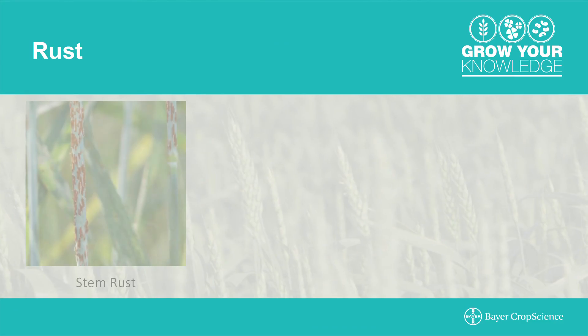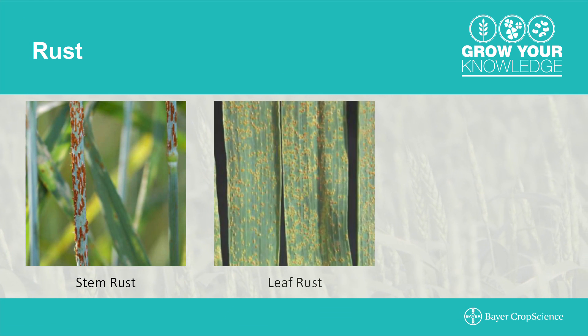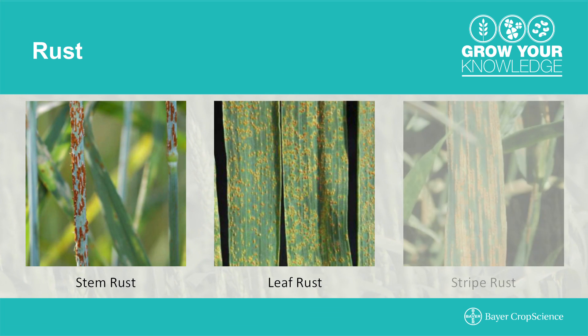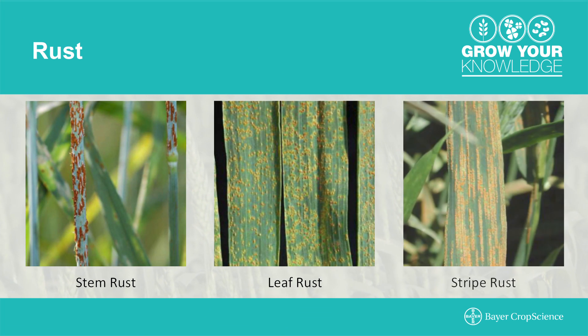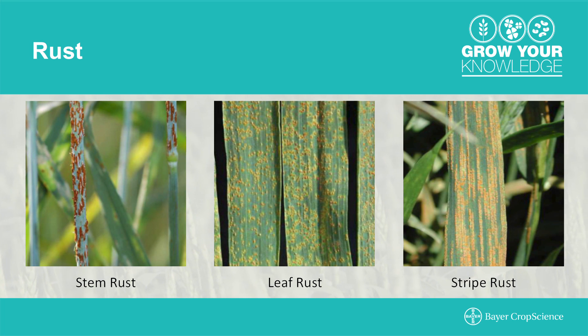When we look at rust diseases, the key is to protect the upper leaves in the canopy that deliver most of the photosynthetic energy to fill the head and develop the kernel. Specifically, when we look at stem rust, they can have an additional negative impact in terms of infecting the stem, weakening it, and causing lodging.